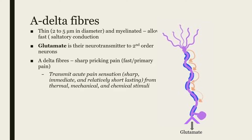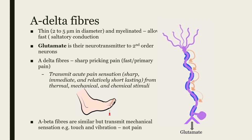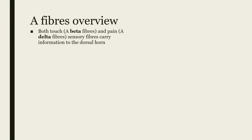A-beta fibers are similar, but transmit mechanical sensation — for example, touch and vibration — not pain sensation. This is important later for understanding gate control theory. Both touch (A-beta fibers) and pain fibers (such as A-delta fibers) carry sensory information to the dorsal horn.